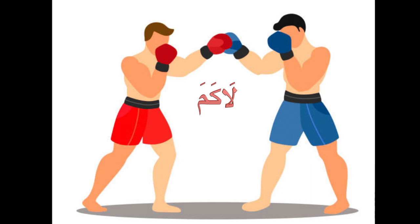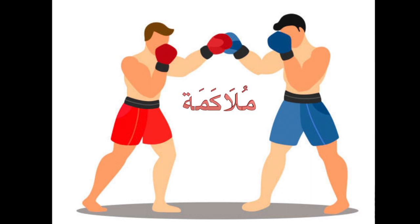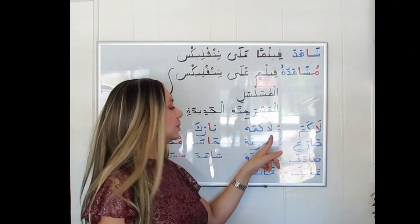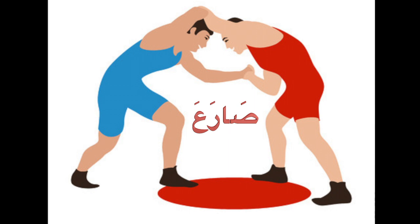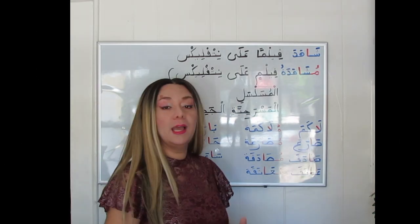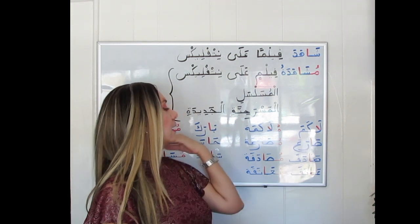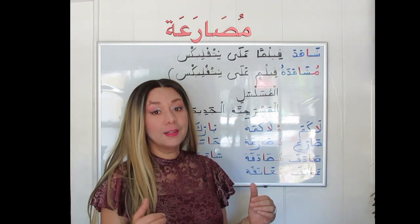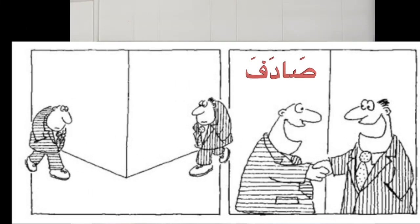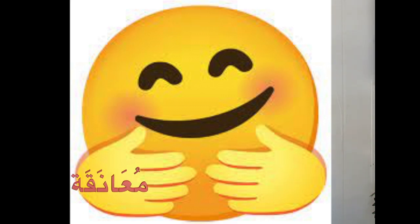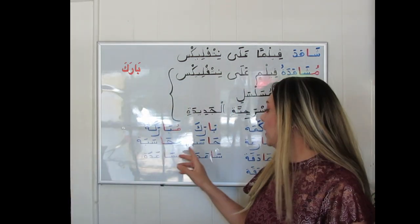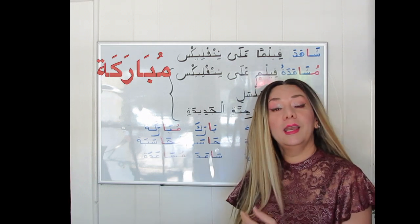لَاكَمَ — to box. مُلَاكَمَة — following the pattern مُفَاعَلَة — boxing. سَارَعَ — Form 3; note that the first radical is always followed by an alif, preceded by a فتحة, so the long vowel alif is always preceded by a fathah. سَارَعَ — to wrestle; مُسَارَعَة — wrestling. سَادَفَ — to encounter; مُسَادَفَة — coincidence. عَانَقَ — to hug; مُعَانَقَة — a hug. بَارَكَ — to bless; مُبَارَكَة — a blessing.